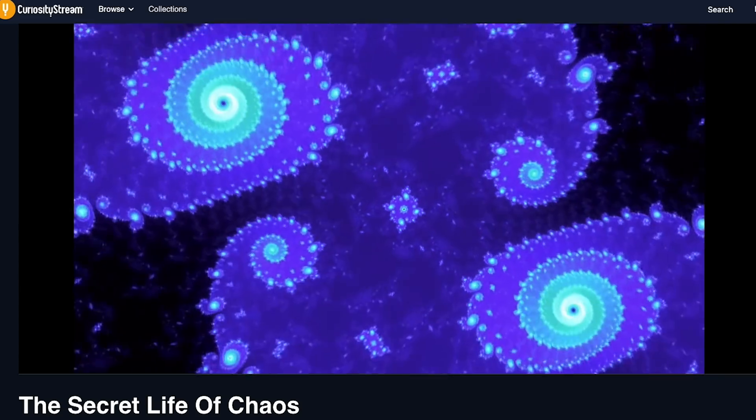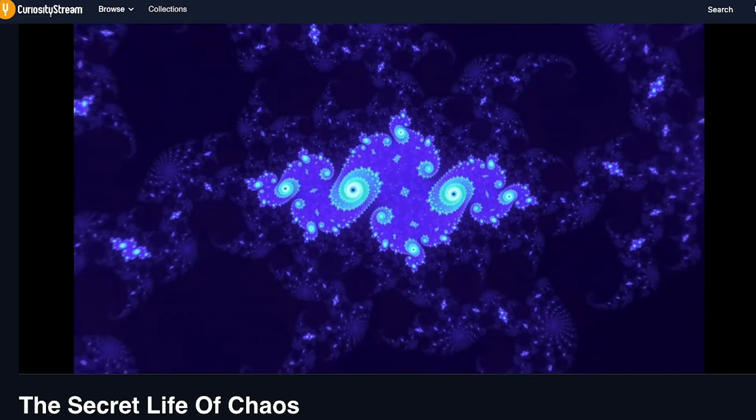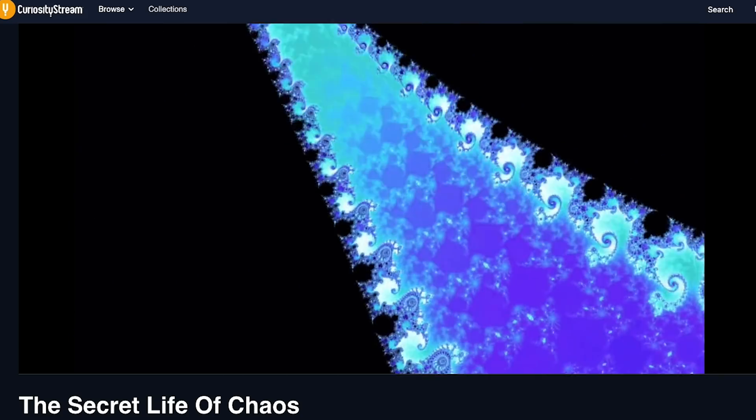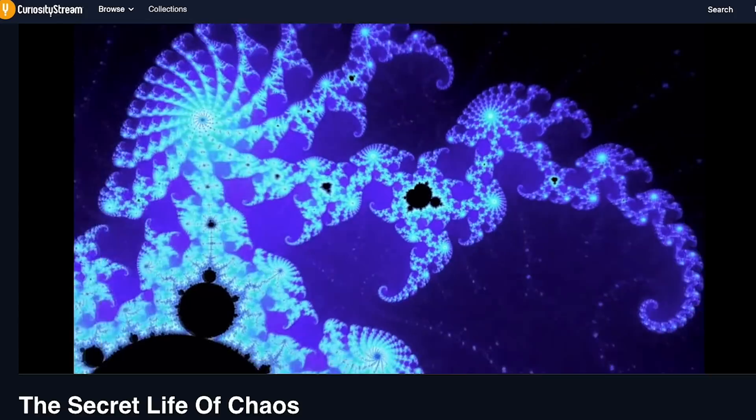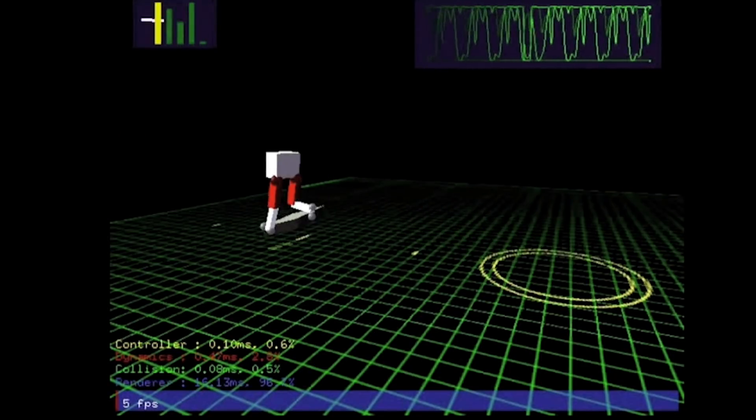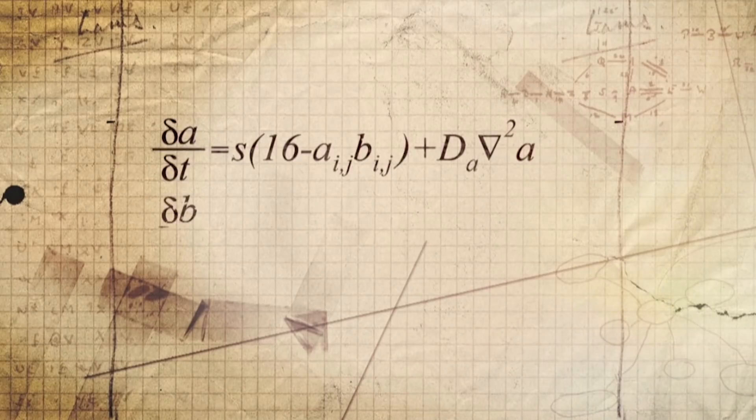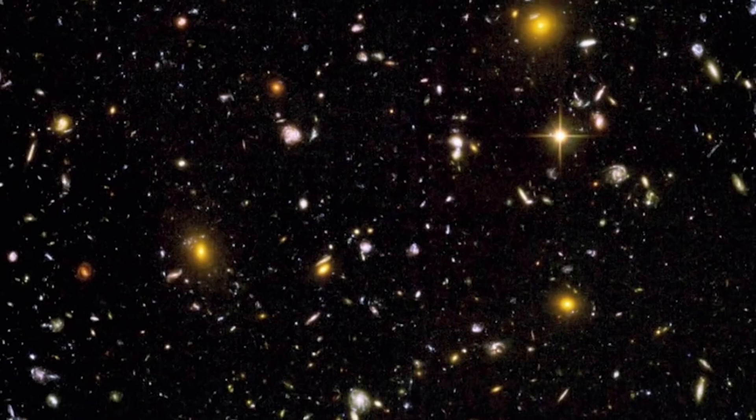This here is a documentary called The Secret Life of Chaos, which actually discusses some of the beauty behind complex numbers, like with the Mandelbrot set. Then it also goes over how patterns and chaos apply to computer algorithms, population growth, and just the universe around us.